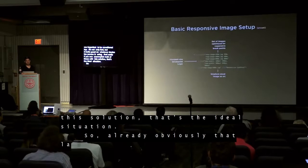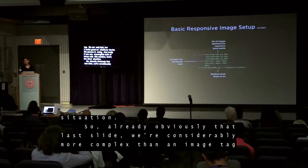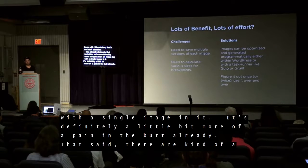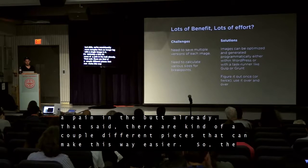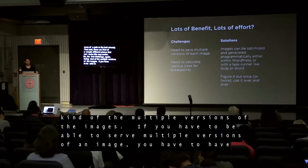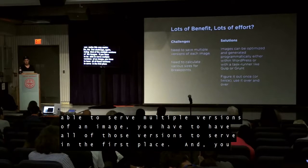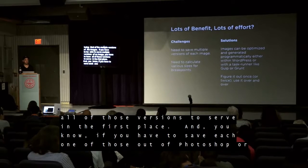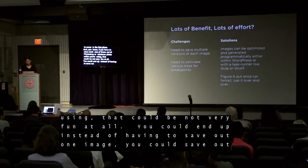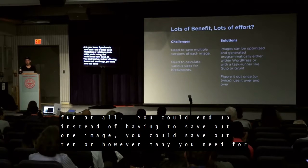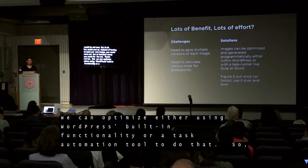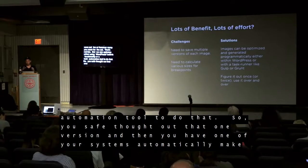That last example is considerably more complex than an image tag with a single image in it — definitely a little bit more of a pain. That said, there are a couple of pieces that can make this way easier. The first challenge is having multiple versions of the images. You could end up having to save out ten or however many versions you need. But we can optimize those programmatically — either using WordPress's built-in functionality, or a task automation tool like Gulp or Grunt. You save out one version and then your system automatically makes all the other versions for you.